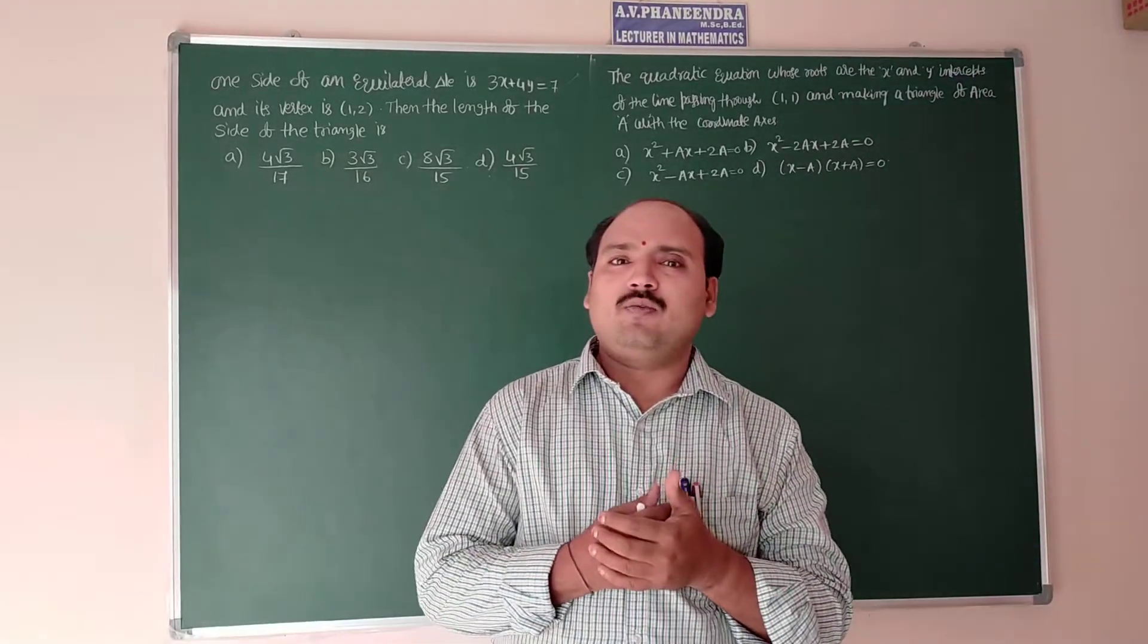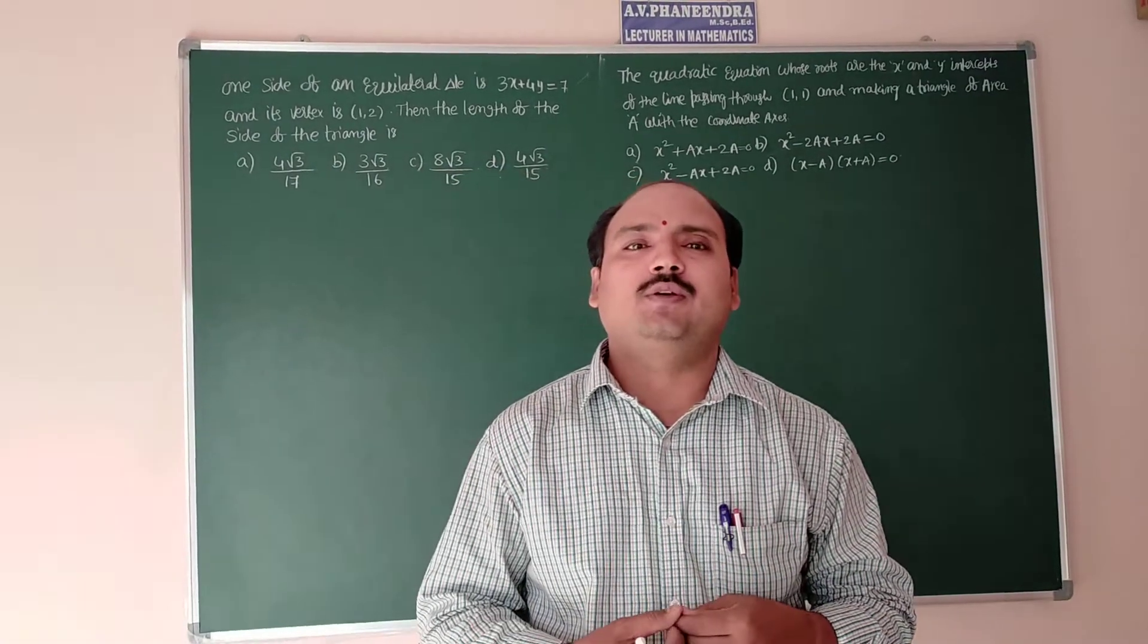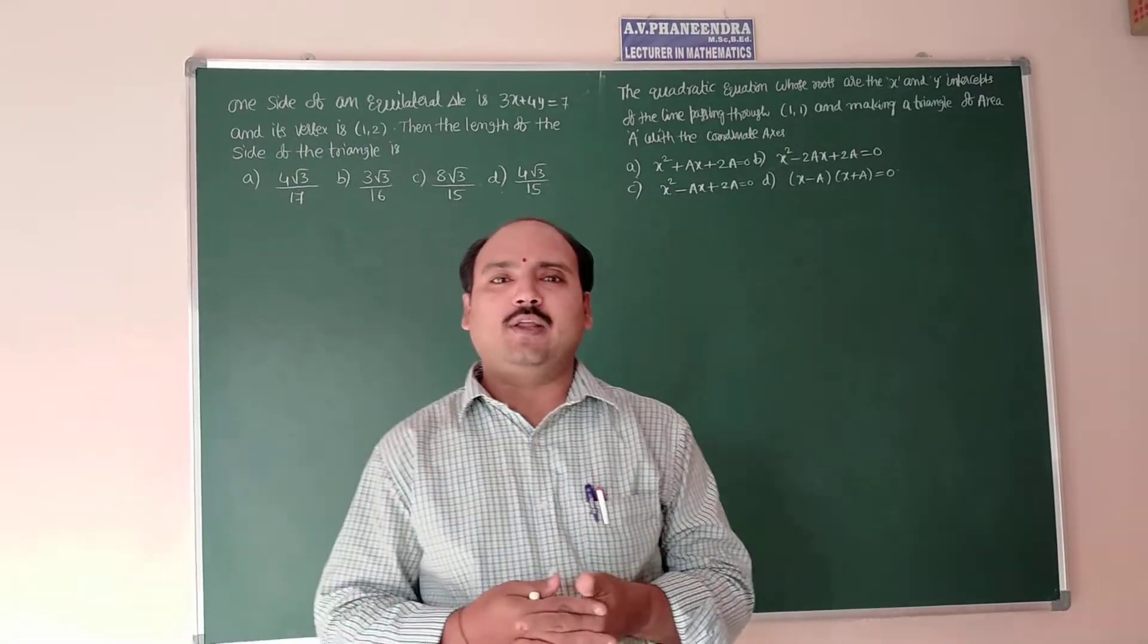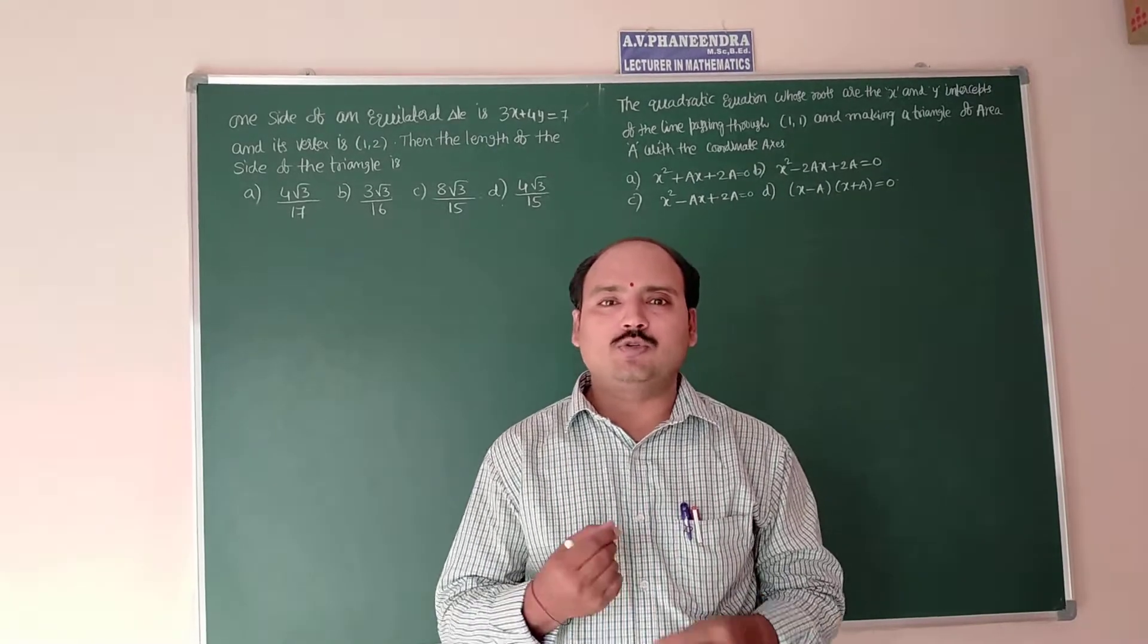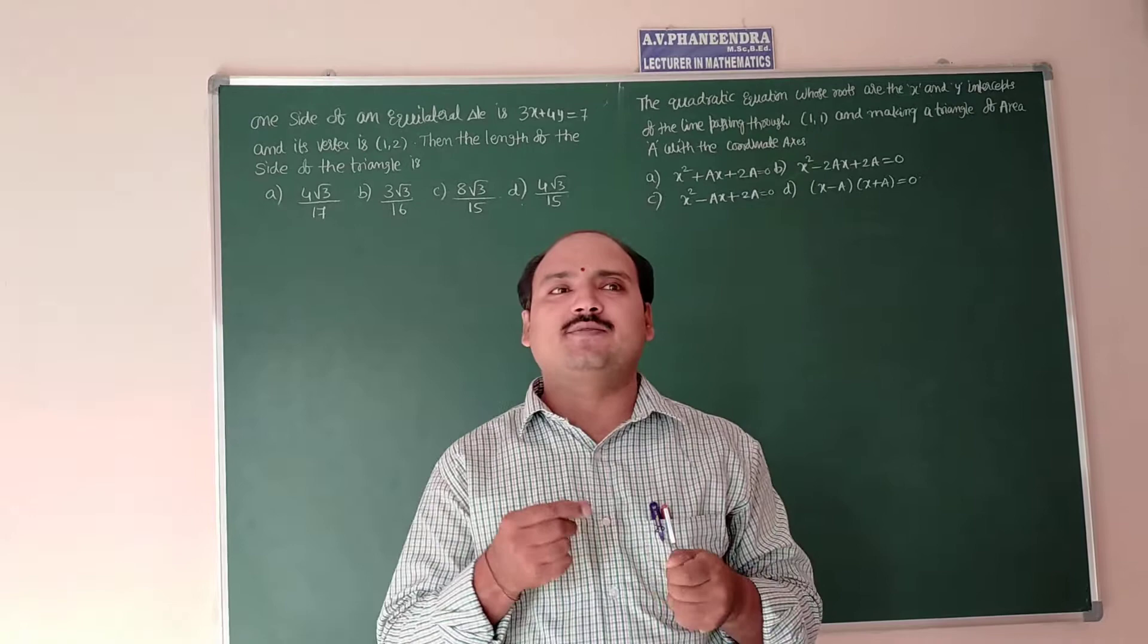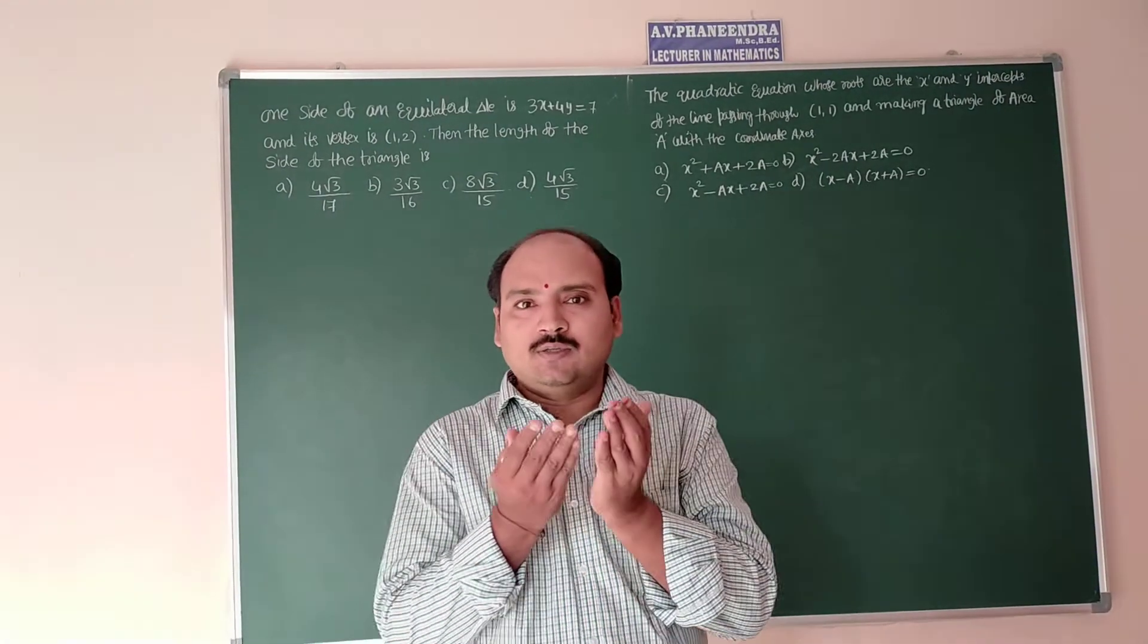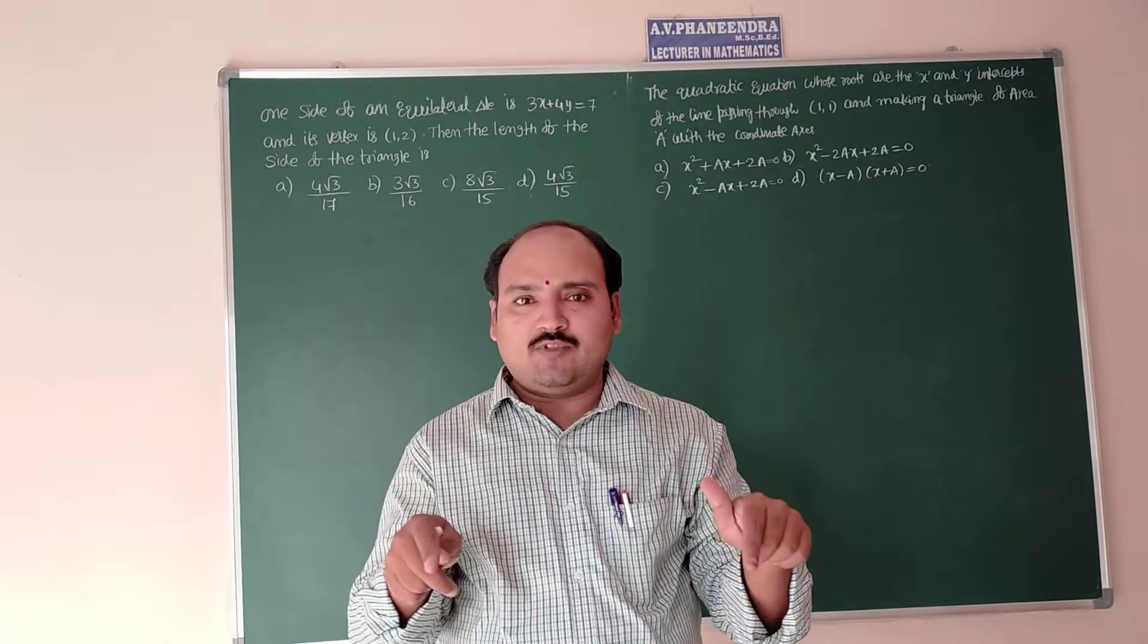In here, one general thing we have to know from previous classes is that in an equilateral triangle, all sides are equal. Suppose we are assuming the length of side is A units. So A is the side, length of the side of the triangle.